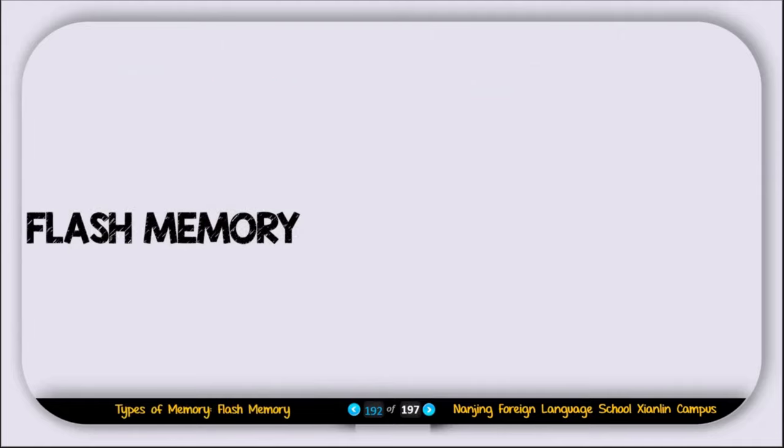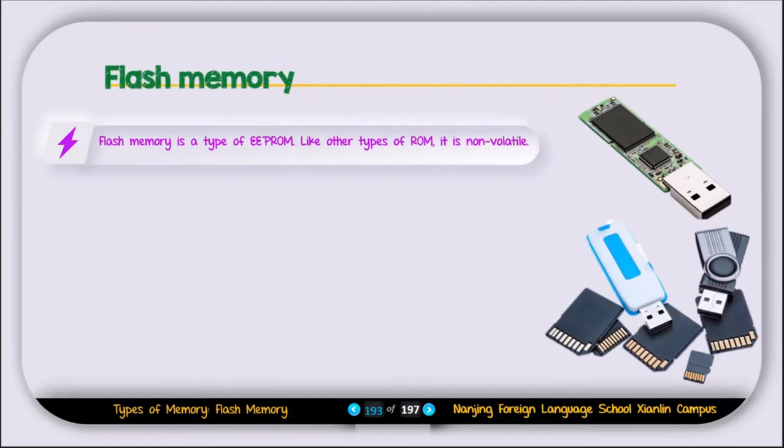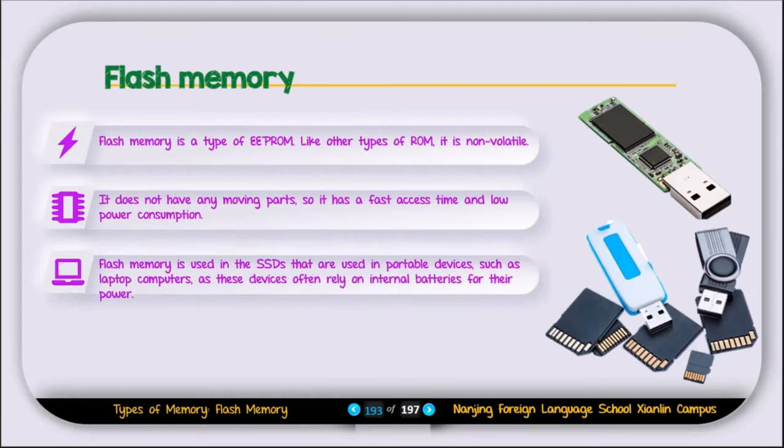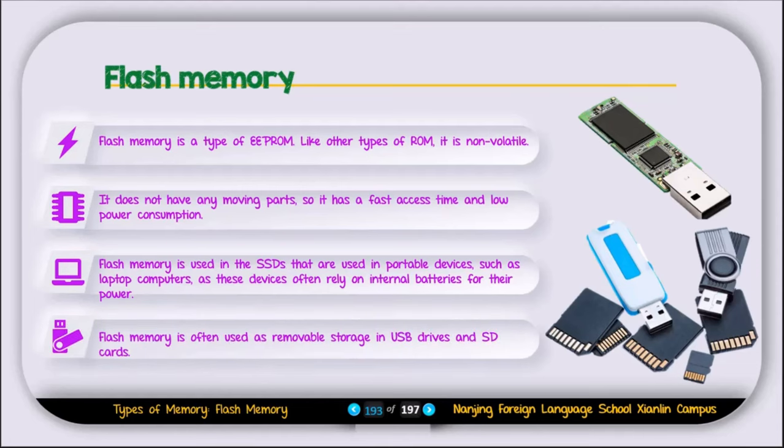Now let's discuss flash memory. So what is flash memory? Flash memory is a type of EEPROM. Like other types of ROM, it is non-volatile, meaning it can store data even without electricity. It does not have any moving parts. It has fast access time and low power consumption. Flash memory is used in SSDs that are used in portable devices such as laptop computers, as these devices often rely on internal batteries for their power. Flash memory is often used as removable storage in USB drives and SD cards.